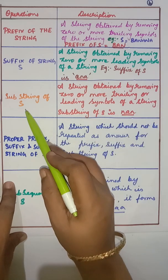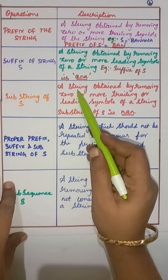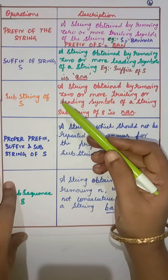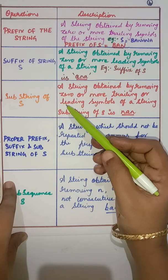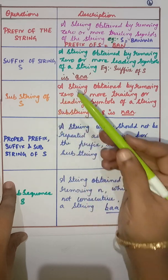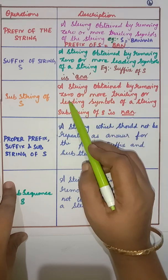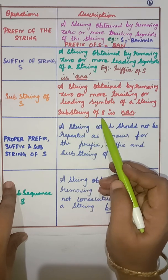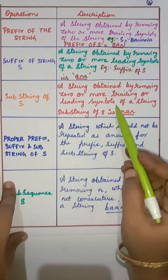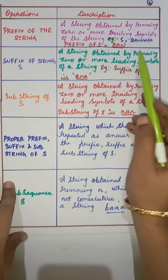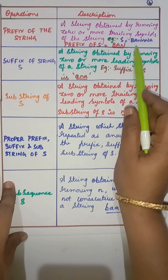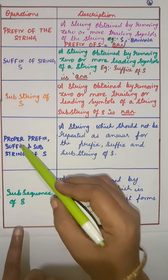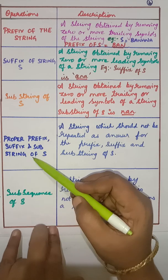Substring of a string: we remove either leading or trailing symbols to get a particular string. A string obtained by removing zero or more trailing or leading symbols of string s. For example, in 'banana', 'nan' is formed by removing 'ba' and 'a' — that is, the leading and trailing symbols.